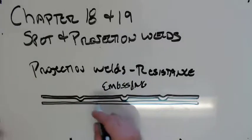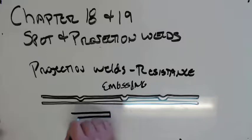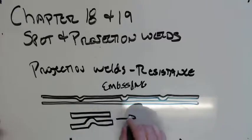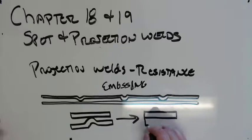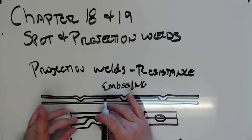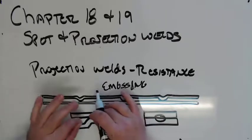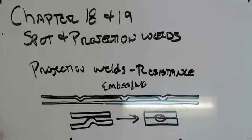So if I started off, or draw it upside down, if I started off with this, after I'm done welding, I'm going to have that right there, because this goes like that. We apply current, it welds itself together right there. And that's projection welding.